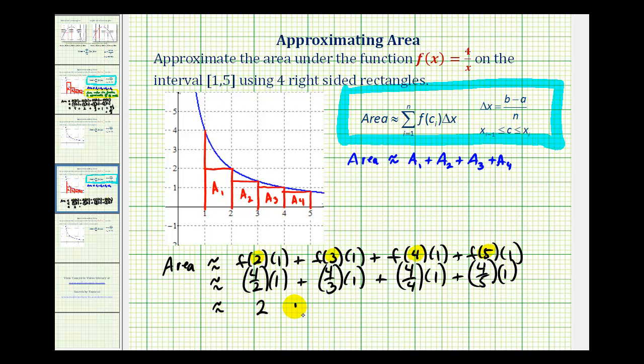So we're going to have 2 + 4/3 + 1 + 4/5. This comes out to 5 and 2/15, or if we want this as an improper fraction, it would be 77/15.